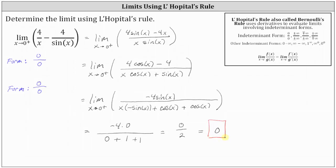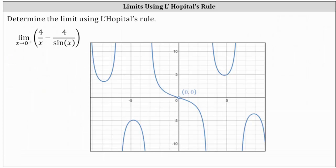Before we go, let's verify this graphically. Here's the graph of the original function, f(x) equals 4 divided by x minus 4 divided by sine x. Notice as we approach x equals 0 from the right, we can see we are approaching the y value of 0, verifying our limit.